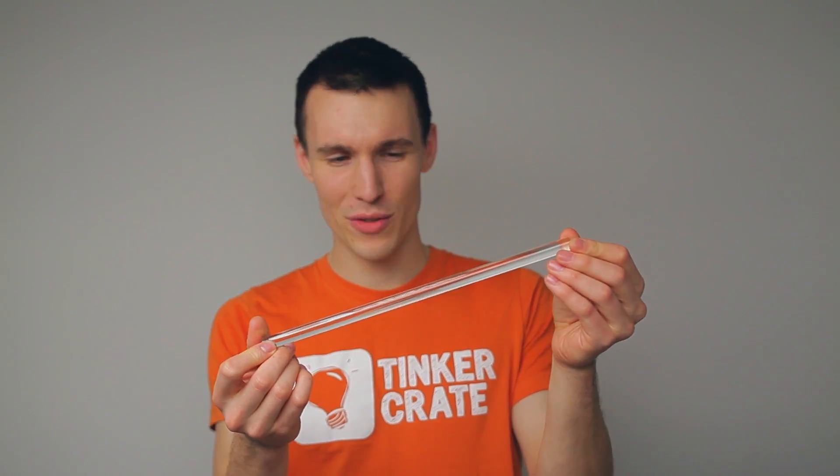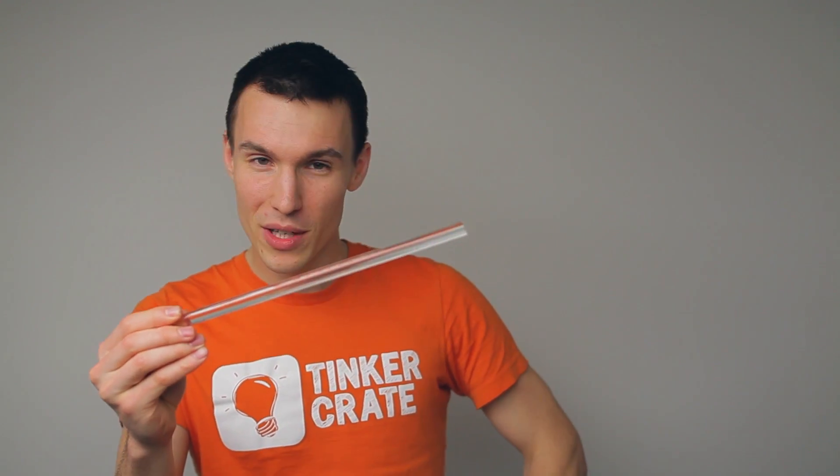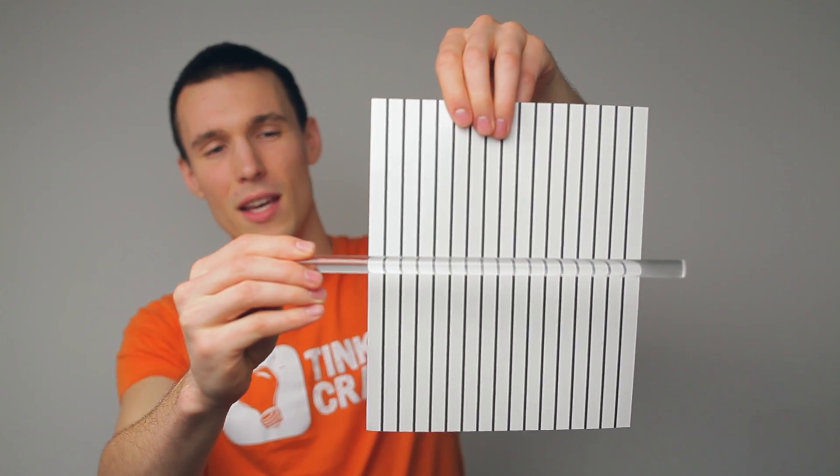Have you ever wondered why you can see see-through objects like this clear glass rod? Well, if we hold it up in front of a simple background like this and move it, you can see the background image begin to bend.